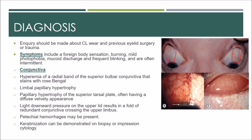Limbal papillary hypertrophy is shown by the arrow, and limbal palisades may be lost superiorly. Papillary hypertrophy of the superior tarsal plate often has a diffuse velvety appearance, as shown in the figure. Light downward pressure on the upper lid results in a fold of redundant conjunctiva crossing the upper limbus. Petechial hemorrhages may be present. Keratinization can be demonstrated on biopsy or impression cytology.